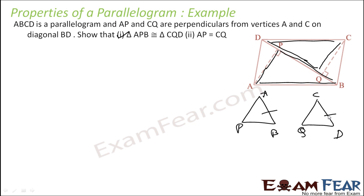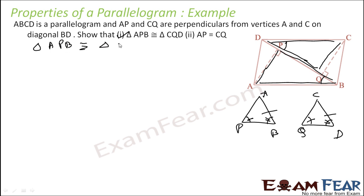Angle P and angle Q will be equal since AP and CQ are perpendicular. Now what about angles — can these angles be equal? Yes, if you see, these are alternate angles. Angle ABP is equal to angle QDC as alternate angles. So with two angles equal and one side equal, the triangles are congruent. Triangle APB is congruent to triangle CQD by angle-angle-side.